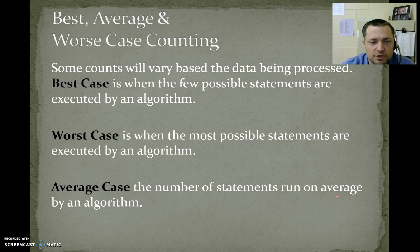Alright. Best, average, and worst case. Some counts will vary based on the data being processed. Best case is the fewest possible if statements are executed by the algorithm. Worst case, the most statements possible are executed by the algorithm. Average is usually somewhere in between.